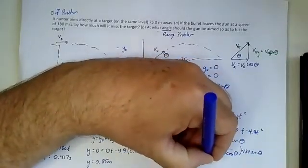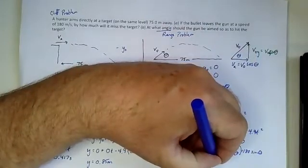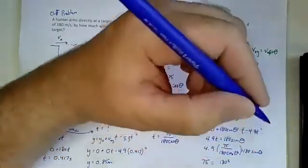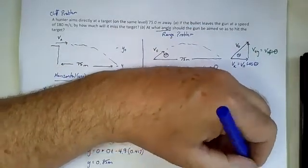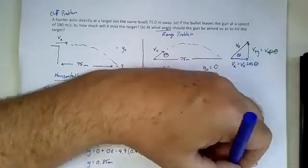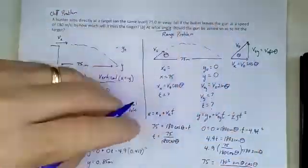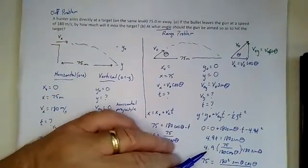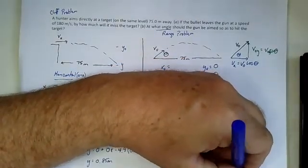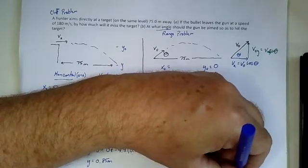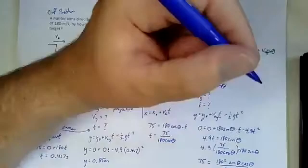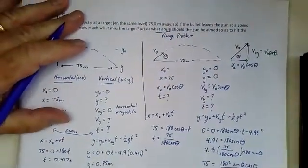So 180 times sin theta. So I forgot my equal sign. So 75 is equal to 180 squared times the sine of theta and then multiplied by the cosine of theta. And then I'll bring this over to the other side, too. So this is one half of G, which is 4.9. And we're pulling back from this, and I'm reminded of something called the range formula.